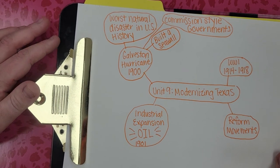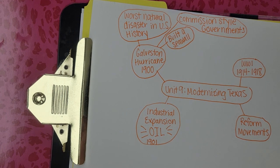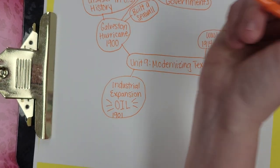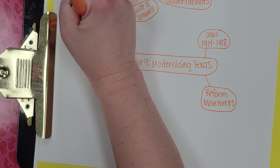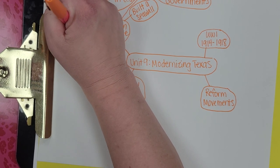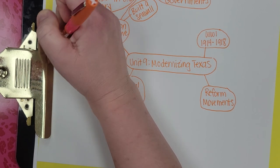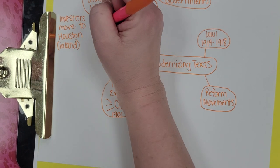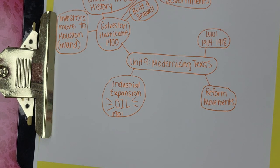Investors moved to Houston, so that would be an economic impact of the hurricane. Houston then becomes the biggest city in Texas. On your test it mentions moving further inland — away from the shore — into the city of Houston, making Houston the largest city in Texas.